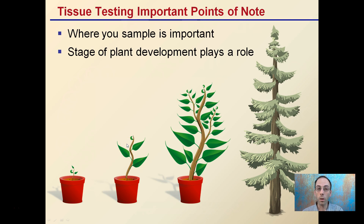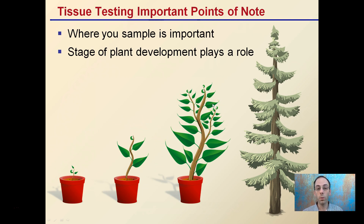When you're tissue testing, there are important points of note. One is where you sample — sampling at the top, the side branch, or the lower branch can play a role in the nutrients in that particular plant. Also, the stage of the plant in its development plays a role. Sampling from a younger plant versus an older plant can influence where you want to take that sample for the best, most consistent results.